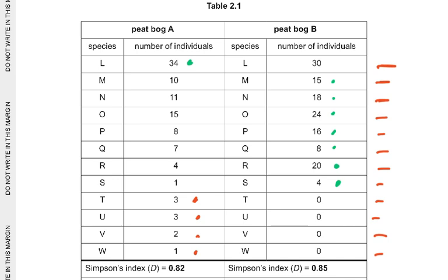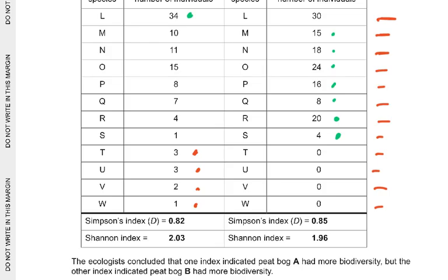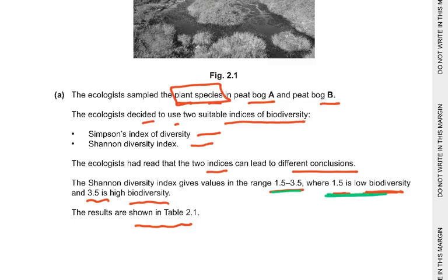Just go through the data, ponder about it, and think it through. For peat bog A the Simpson's index is 0.82 and for B it is 0.85, so B is a little more. The Shannon index for A is 1.5, which is low biodiversity, and for B it is 2.03. Since 1.5 is low biodiversity and 3.5 is high biodiversity, read the question again and look at it carefully.